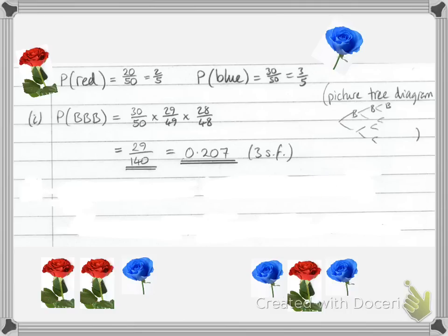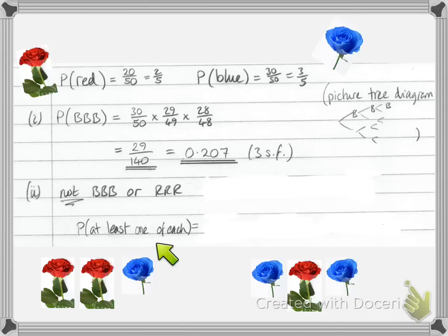We then move on to the second part of the question. And we're looking for the probability of at least one of each colour. Now we could have two reds and one blue. Or we could have one red and two blue.